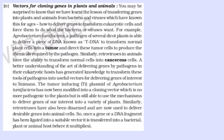Number 4: Vectors for cloning genes in plants and animals. We have learned the lesson of transferring genes into plants and animals from bacteria and viruses, which have known this for ages — how to deliver genes to transform eukaryotic cells. For example, Agrobacterium tumefaciens, a pathogen of several dicot plants, is able to deliver a piece of DNA known as T-DNA to transform normal plant cells into a tumor and direct these tumor cells to produce chemicals required by the pathogen. Similarly, retroviruses in animals have the ability to transform normal cells into cancerous cells.